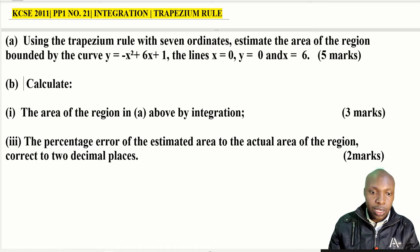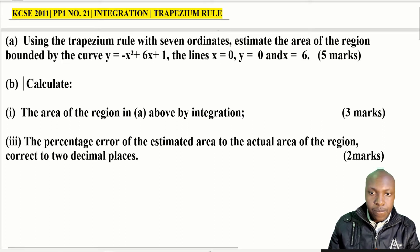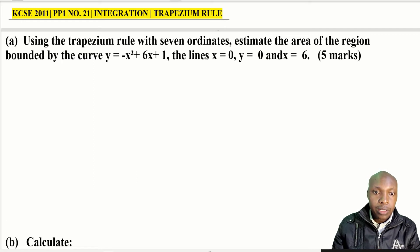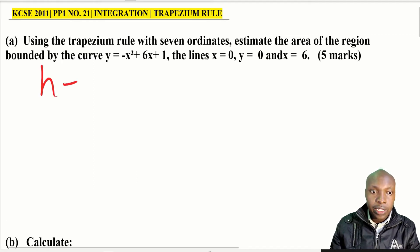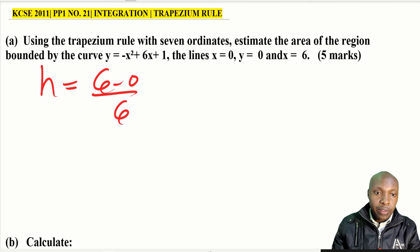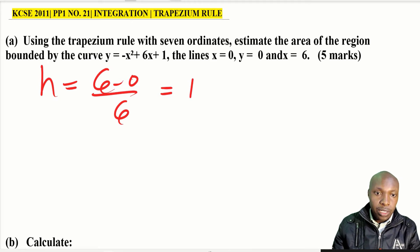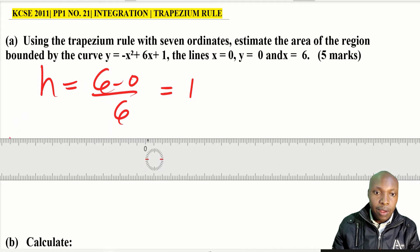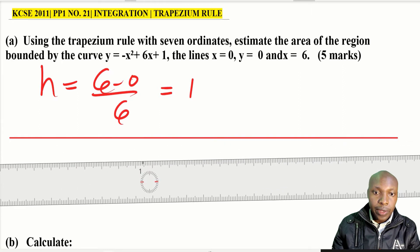For the first part, using seven ordinates, we take the limits from x = 0 to x = 6. We get the interval height by taking 6 minus 0, then dividing by 6 (not 7) to get seven ordinates, giving h = 1. We then prepare a table of values using x values from 0 to 6.